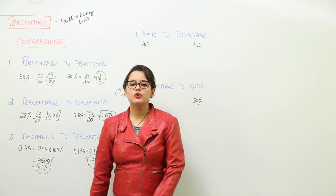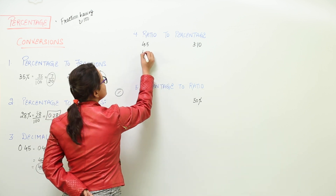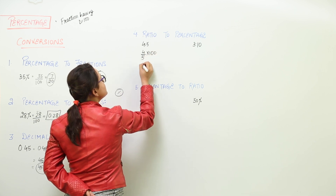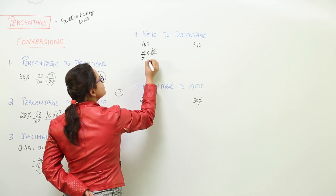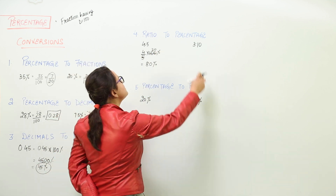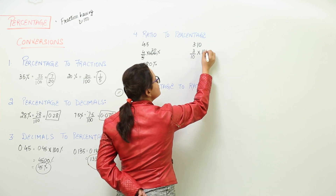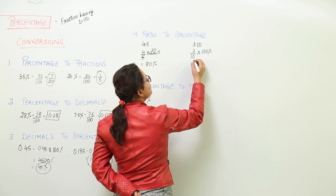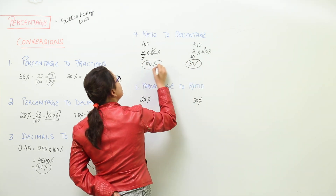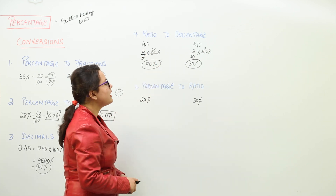Now let us move on to converting ratios to percentage. The first step is to convert the ratio into fractional form and then multiply with 100. For 4 is to 5, this simplifies to give 80 percent. Similarly, for 3 is to 10, convert to fractional form and multiply by 100 percent. Simplifying gives 30 percent. So 80 percent and 30 percent are the respective percentages for the ratios 4:5 and 3:10.